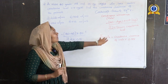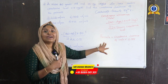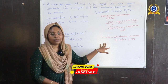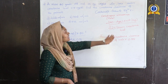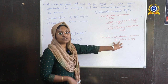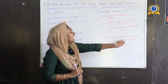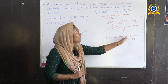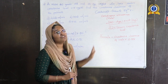The Cockcroft-Gault equation for males is: CrCl = (140 − age in years) × weight in kg ÷ (72 × serum creatinine level). For females, multiply the male value by 0.85.